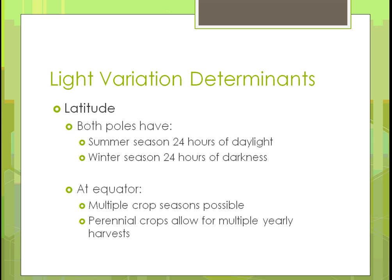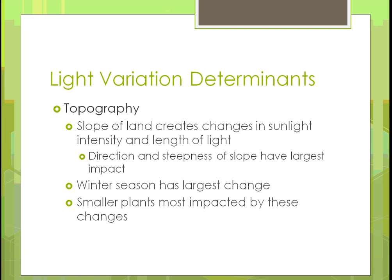Equatorial areas are starting to use perennial crops — crops that are planted once and always grow — allowing for multiple yearly harvests. Topography, meaning the slope and flatness of land, creates large changes in light intensity and duration. A mountain can delay when sunlight arrives or cut it off early on the other side. The direction and steepness of a slope have the greatest impact, and the winter season amplifies this because the sun sits lower in the sky.